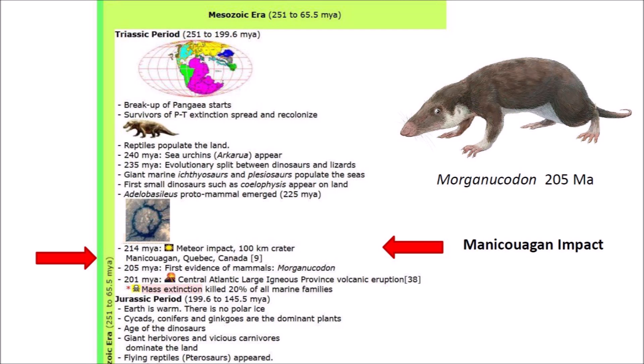There is evidence that the first mammals arose about 10 million years after the Manicouagan impact. A rat-like mammal, Morganucodon, first appeared about 205 million years ago and lived from the late Triassic to the middle Jurassic. The eruption of the central Atlantic large igneous province 201 million years ago caused an extinction event that killed 20% of all marine families, marking the end of the Triassic period and the start of the Jurassic period.